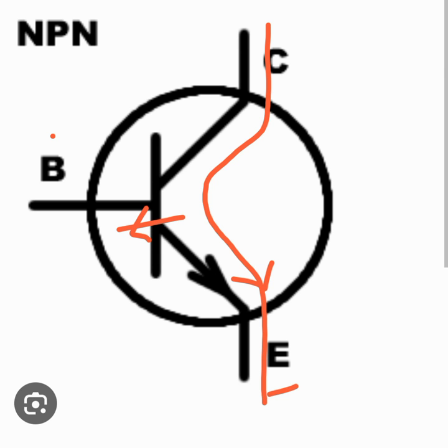In an ideal transistor there is no current that will flow in the base, but in a practical transistor you will have a minute amount of current that goes through the base. When we show the direction of the current, we indicate that through the arrow shown here.